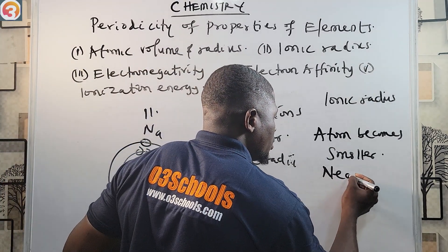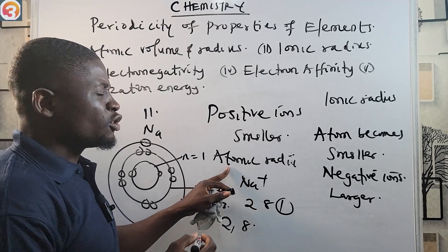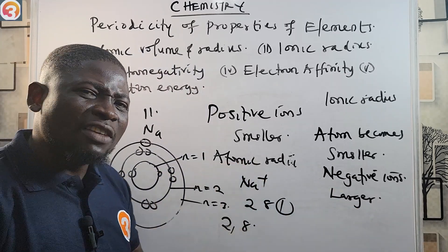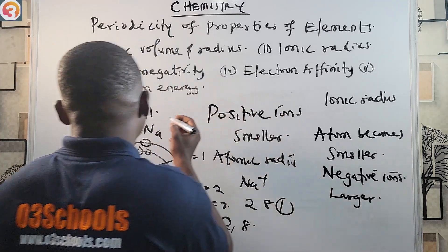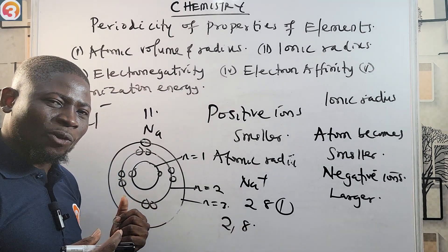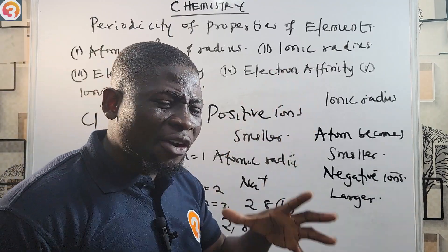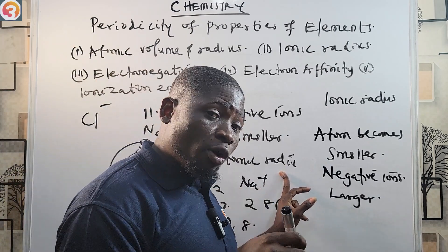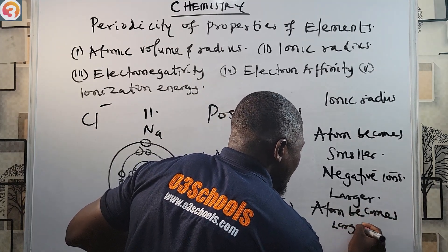On the other hand, the ionic radius of negative ions is usually larger than the corresponding atomic radii. This is because a negative ion is formed by electron gain. When an atom gains an extra electron, that makes the atom larger or bigger.